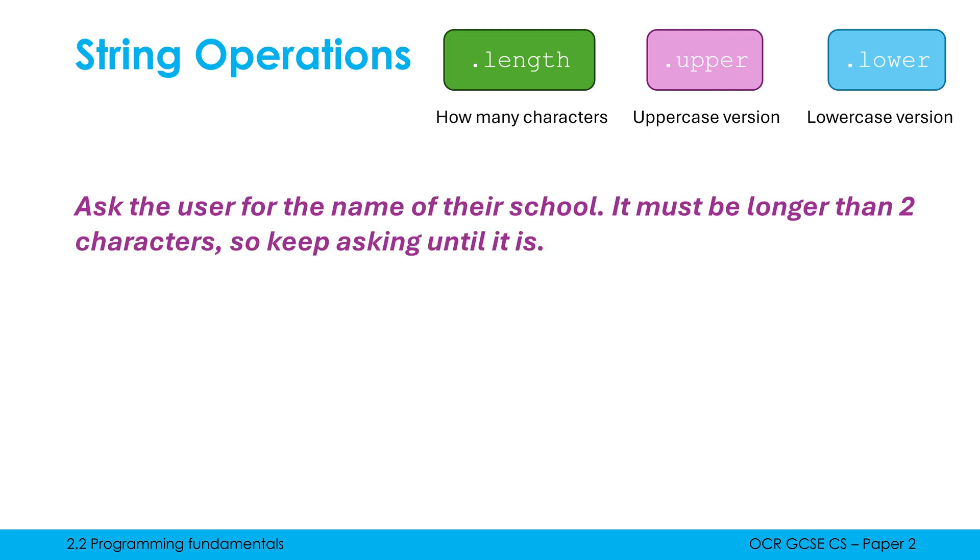Let's look at a couple of examples of how these might get used. We're going to here ask the user for the name of their school. We're told it must be longer than two characters, so we're going to keep asking until it is longer than two characters. We've got to use a condition control iteration structure here because we don't know how many times it's going to loop, but I'm going to need to use dot length to figure out how long the string is.